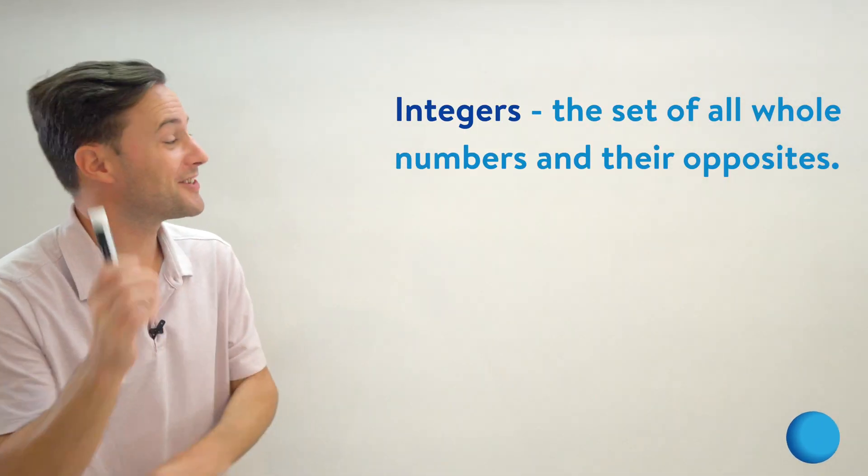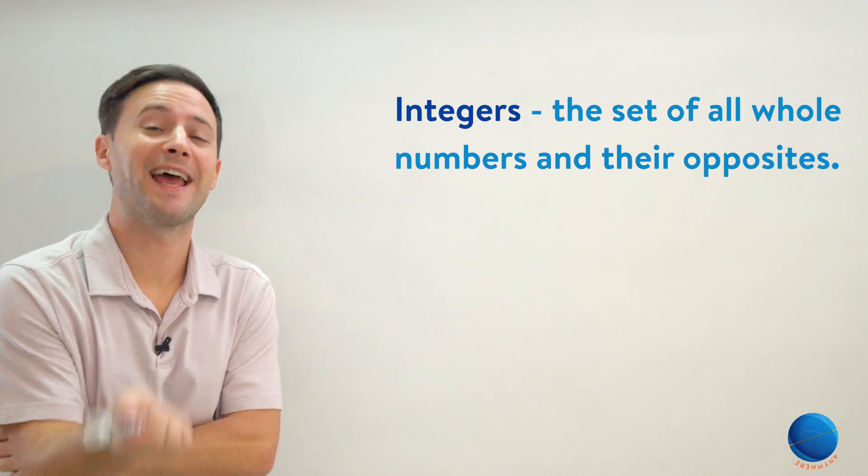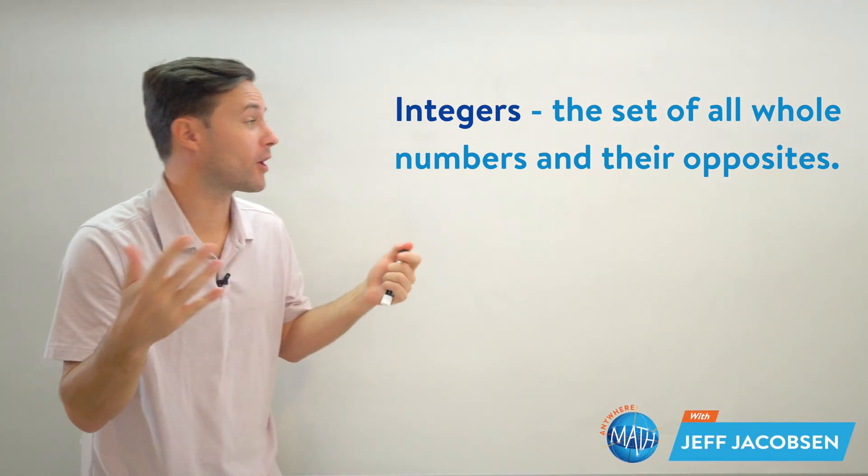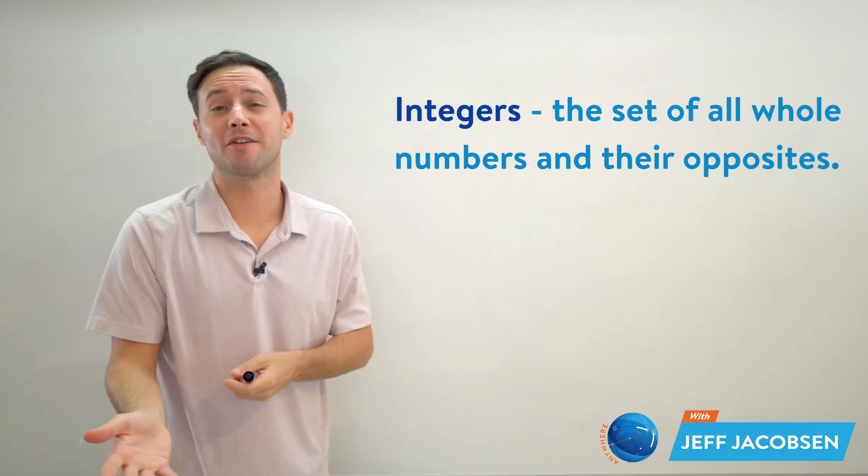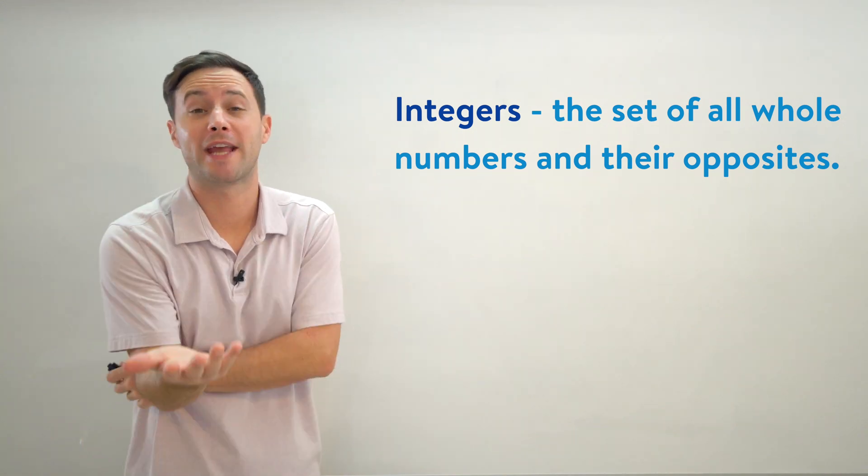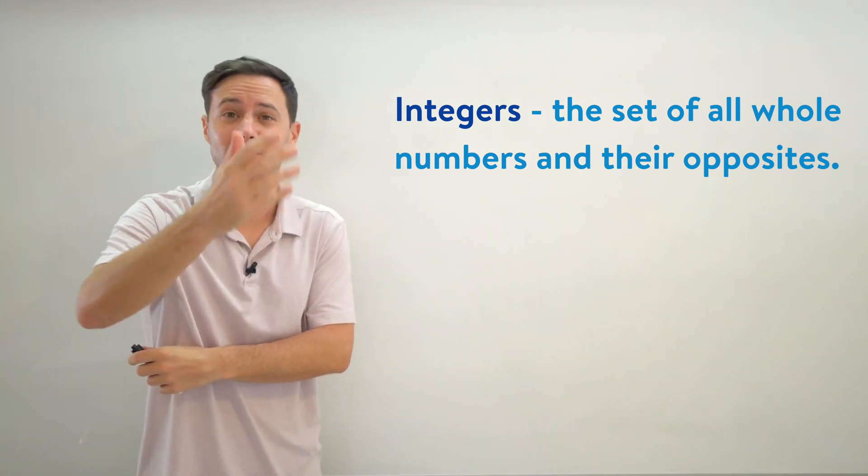All right, let's talk about integers. Integers are the set of all whole numbers and their opposites. Now let's break that down a little bit. First, what are whole numbers again? Whole numbers are the numbers you grew up with when you first started learning math and you started learning how to count: zero, one, two, three, all the way up to infinity.